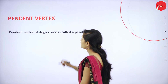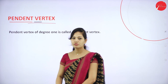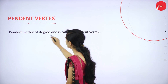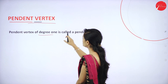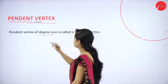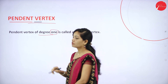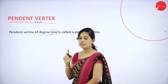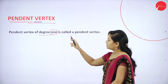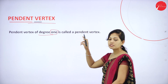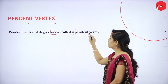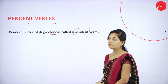The next concept is pendant vertex. A vertex of degree 1 is called a pendant vertex. So in a pendant vertex, the degree is always 1. If the degree of a vertex is 1, then we call it a pendant vertex.